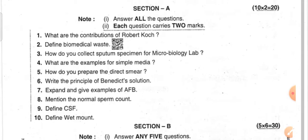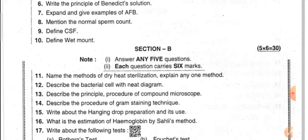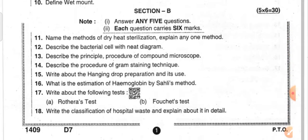Expand and give examples of AFB — AFB means acid-fast bacilli — for identification of TB. Mention the normal sperm count. Define CSF — cerebrospinal fluid. Define wet mount.